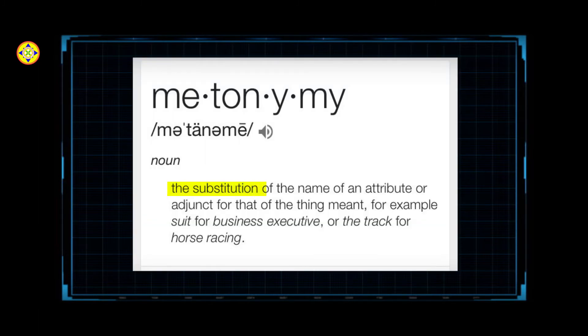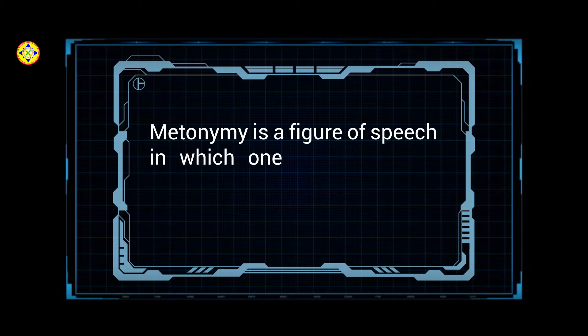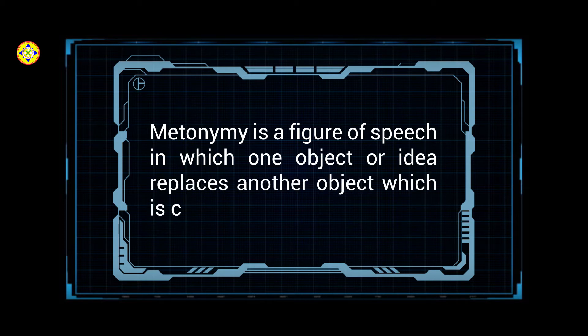Metonymy is the substitution of the name of an attribute or adjunct for that of the thing meant. So, metonymy is a word or phrase that is used to represent another word. Apart from that, metonymy is a figure of speech in which one object or idea replaces another object which is closely related to it.